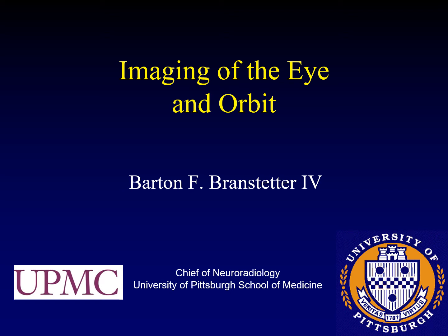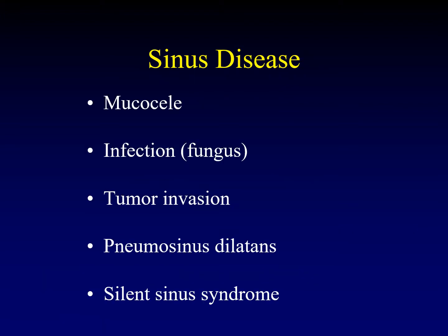This is the sixth and final portion of the lecture on imaging of the eye and orbit. Diseases of the paranasal sinuses will often secondarily affect the orbit, usually from mass effect. Let's run through this list of diagnoses.